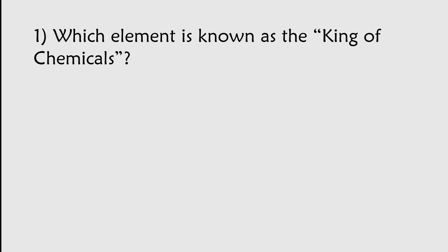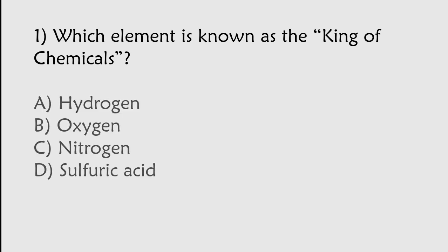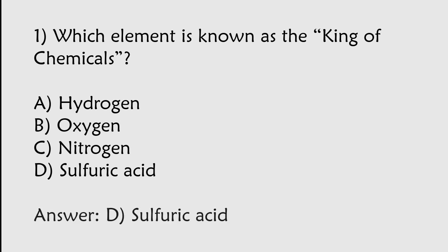Which element is known as the king of chemicals? Hydrogen, Oxygen, Nitrogen, Sulfuric Acid. The correct answer is option D. Sulfuric Acid is known as the king of chemicals.